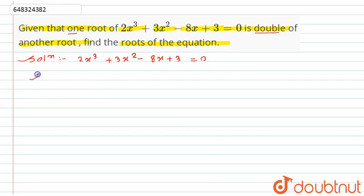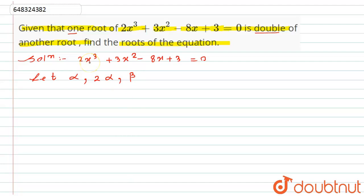We will let one root be α, so another root will become 2α, and let the third root be β, because this polynomial is degree 3 (power of x cube).